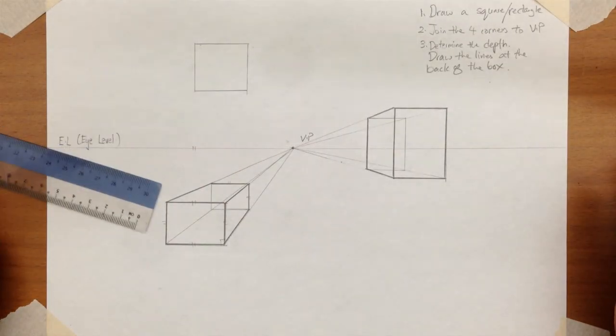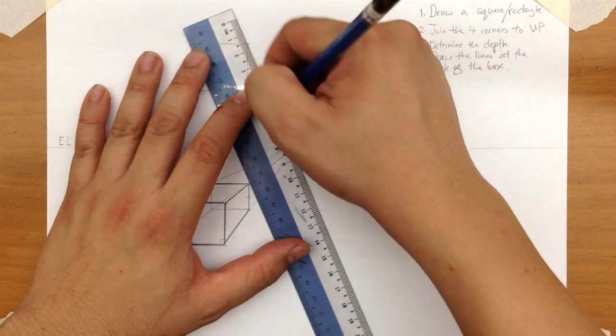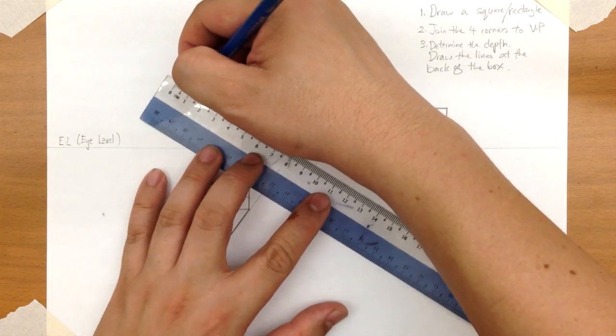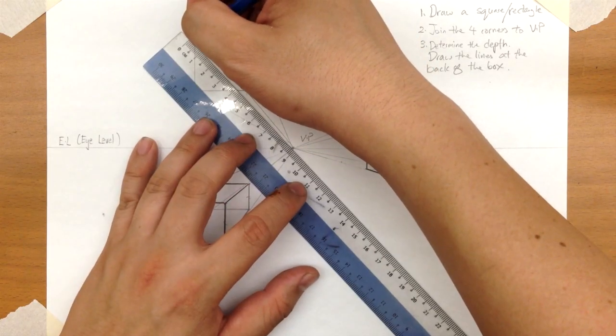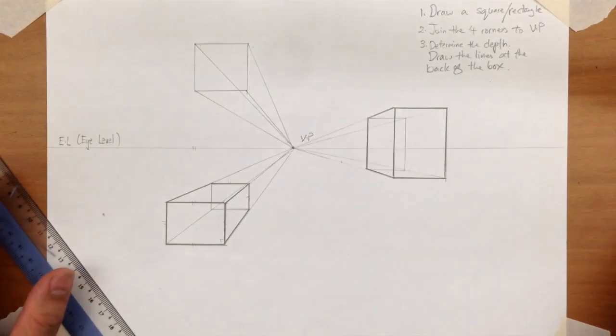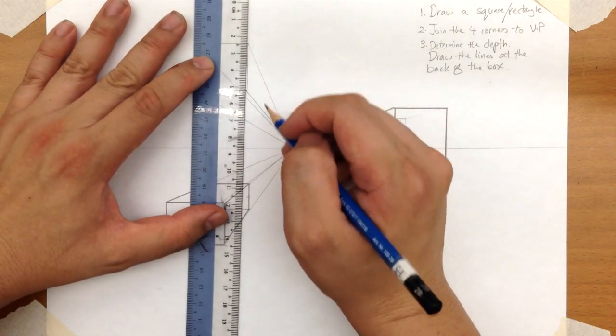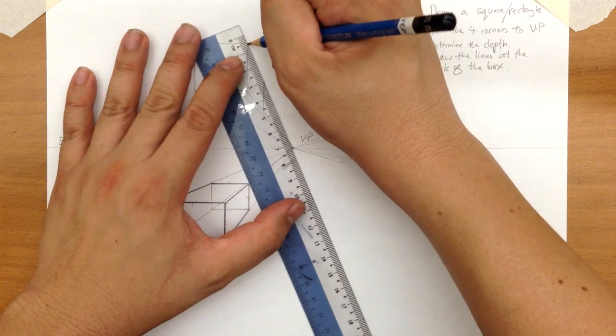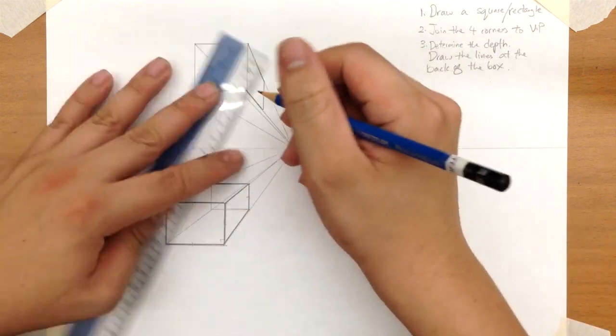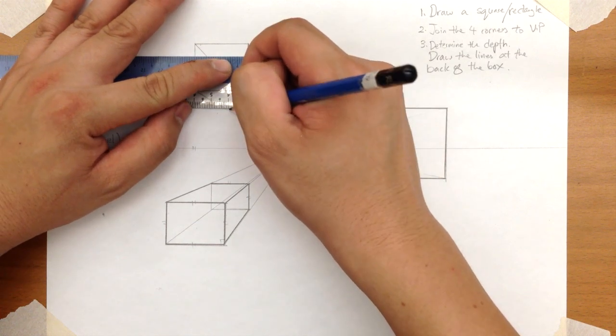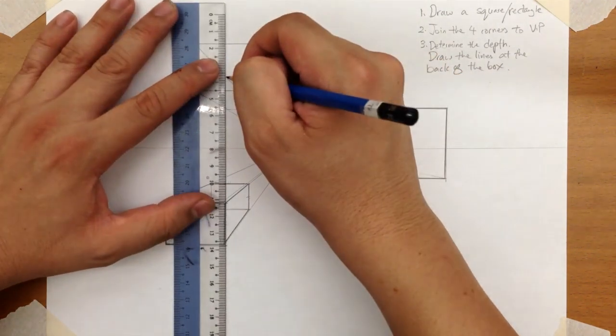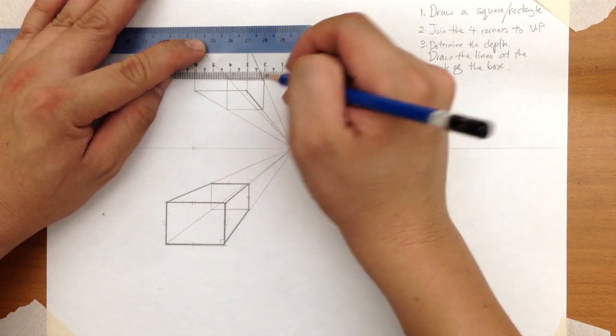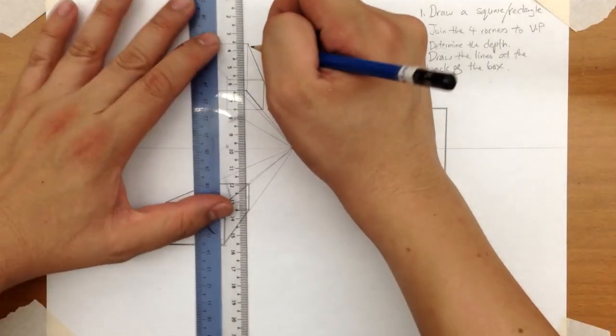Okay. Step two, draw in the four corners to the vanishing point. And step three, determine the depth. Finish drawing the lines at the back. And step two, stop another corner.